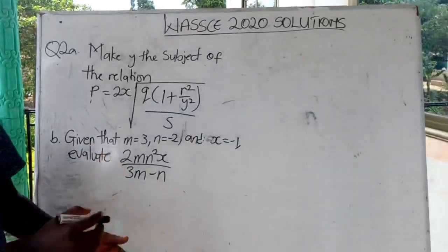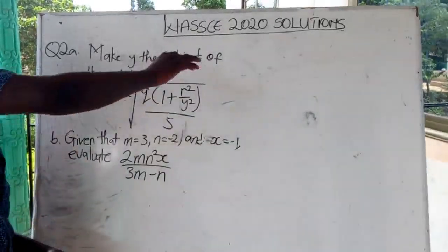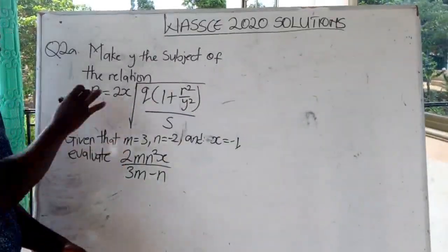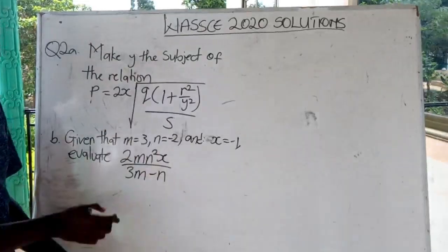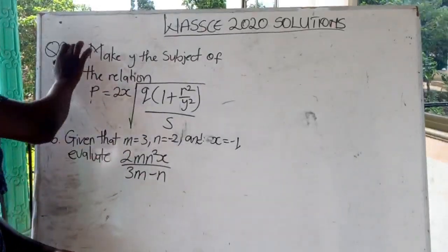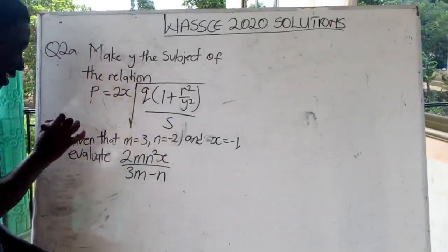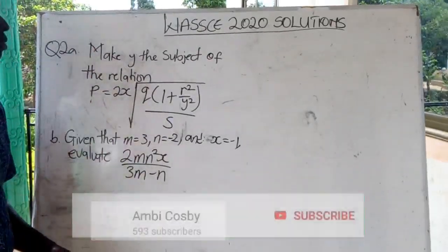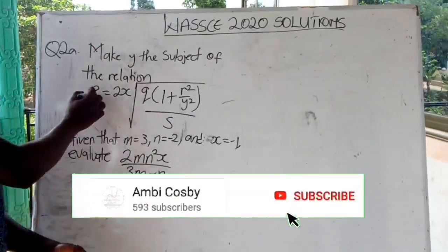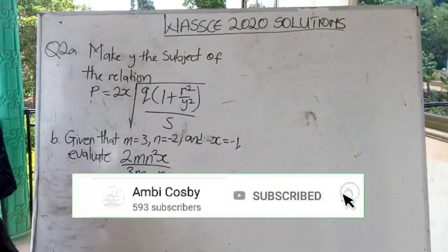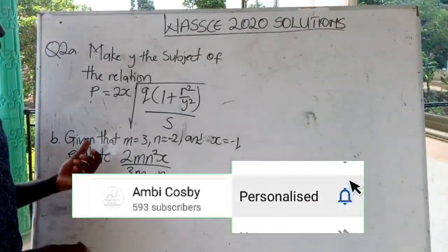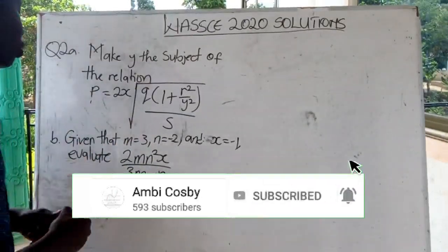In this video we are solving the 2020 Core Mathematics question 2. I'm going to take you to question 2a and then b. Now let's make y a subject of the relation P is equal to 2x...